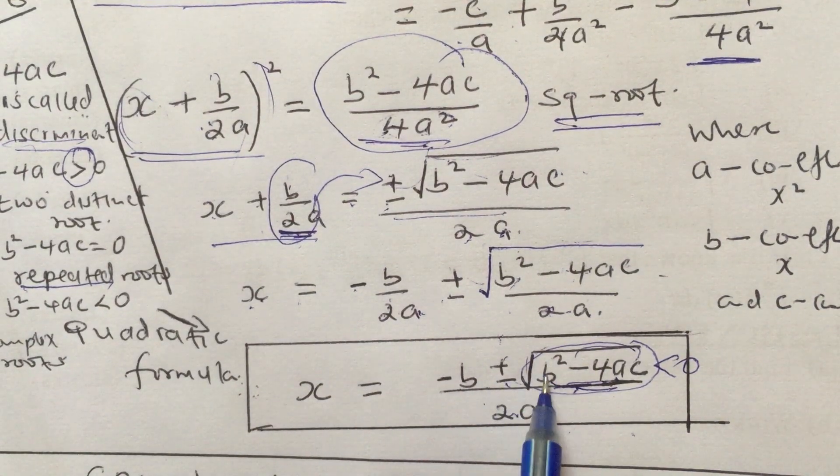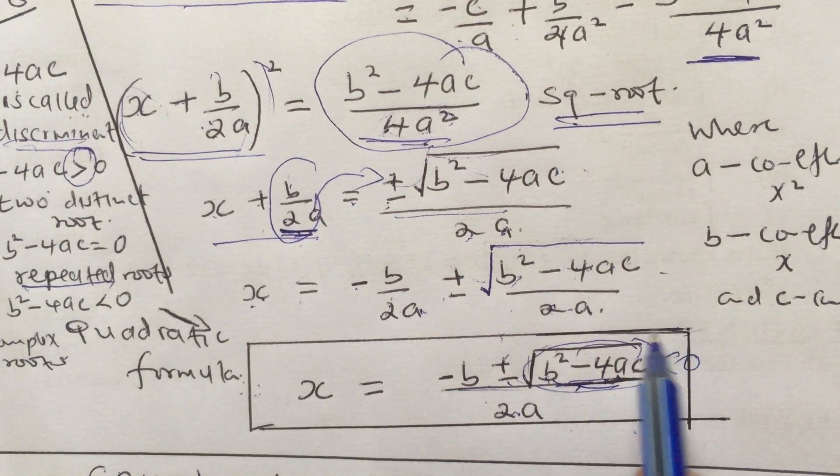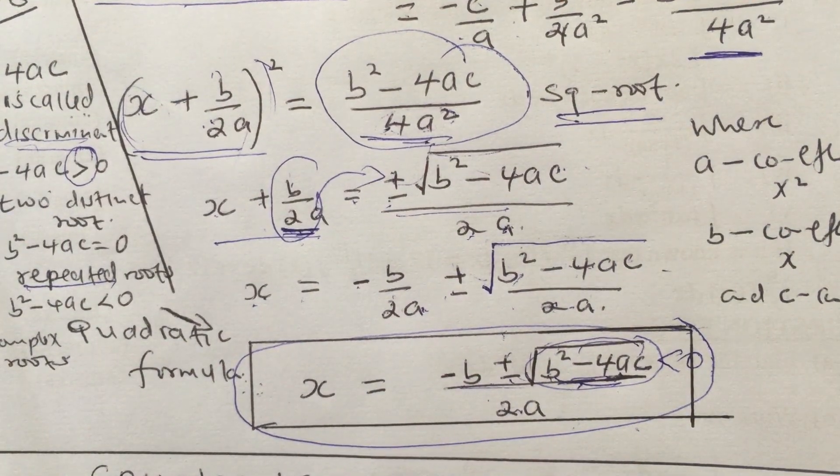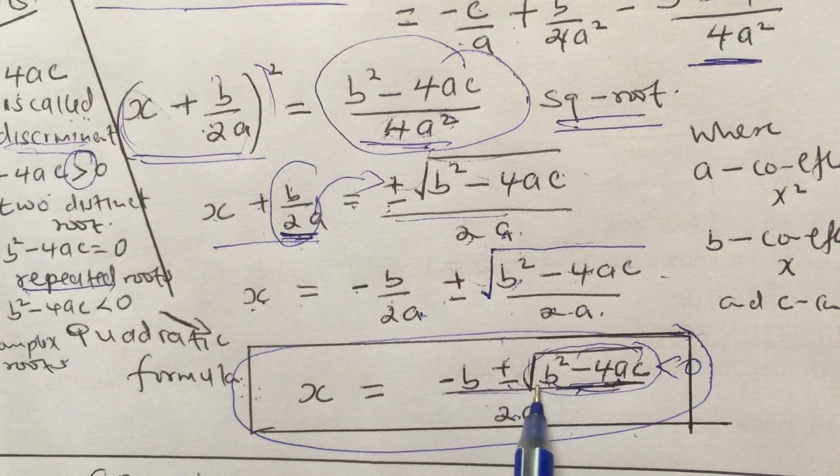Therefore, this results in x = (-b ± √(b² - 4ac))/2a. This formula we are coming up with here is now the quadratic formula. Realize that a is the coefficient of x², b is the coefficient of x.